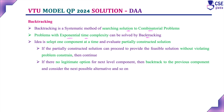The idea of backtracking is to select one component at a time and evaluate a partially constructed solution. Every step, we select one component and derive the partially constructed solution. If the partially constructed solution can proceed to provide a feasible solution without violating the problem constraints, we continue. Suppose there are no legitimate options for the next level component — then we backtrack to the previous component.